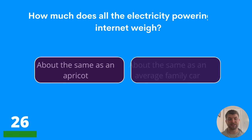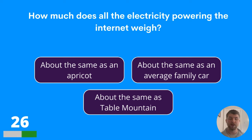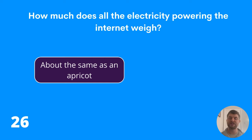We are a quarter of the way through this quiz. Question twenty-six: how much does all the electricity powering the internet weigh? About the same as an apricot, about the same as an average family car, or about the same as Table Mountain? The answer is about the same as an apricot.